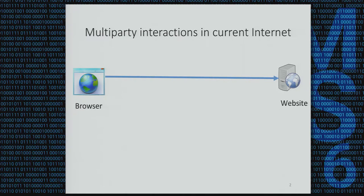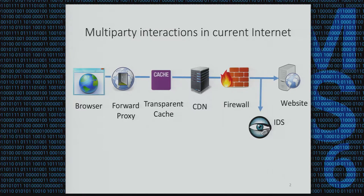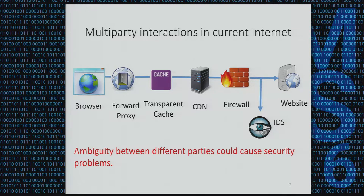In the traditional internet, a client request is directly sent to the web server — only two parties are involved in the communication. In the current internet, many different middleboxes are added to the network. A client request needs to be processed by multiple different systems, and these systems are often independent from each other. So if any two parties are inconsistent in parsing HTTP messages, it could cause security problems.